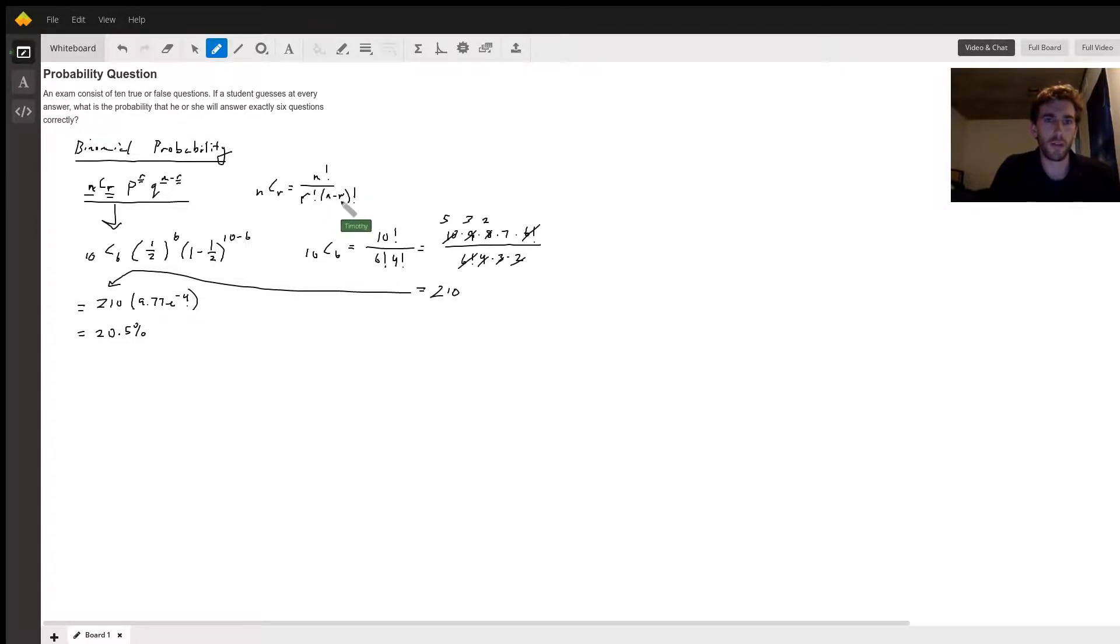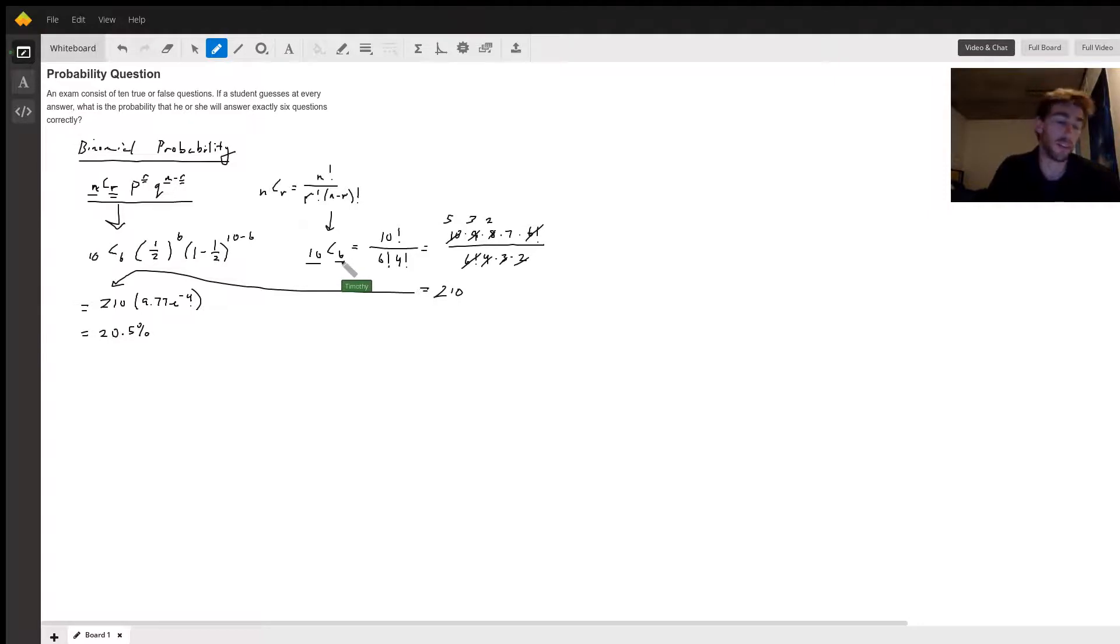We have 10 questions and 6 correct answers, or 6 successes if you will. It'll be 10 factorial over 6 factorial times 4 factorial, and you'll get 210. You can see the math here - evening this out, you can divide the 6 factorial by 6 and then factor out over here.